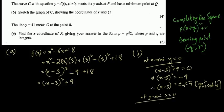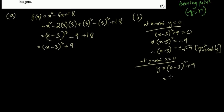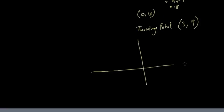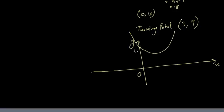At the y-axis, x = 0: y = (0 - 3)² + 9 = 9 + 9 = 18, so it cuts at (0, 18). The turning point is (3, 9) — opposite sign for x, same value for y. The sketch shows a parabola above the x-axis, cutting the y-axis at 18 with turning point at (3, 9).